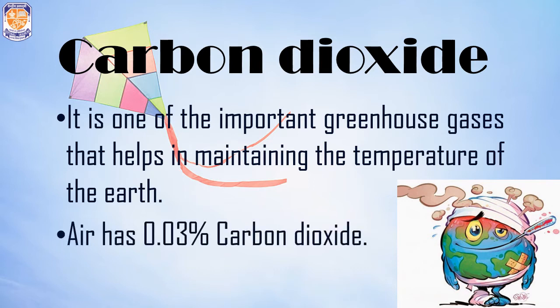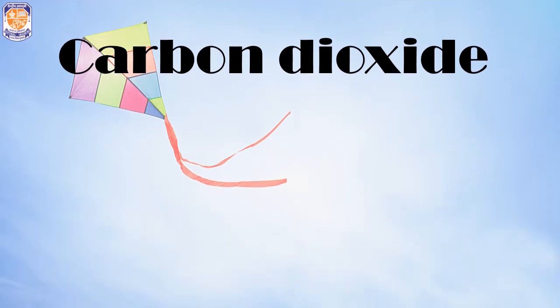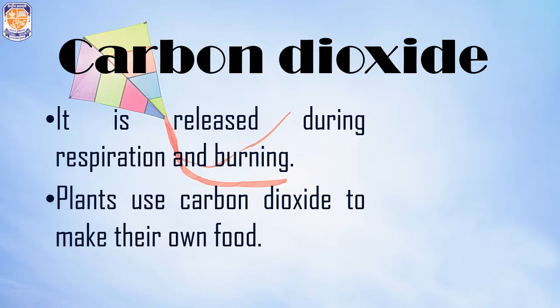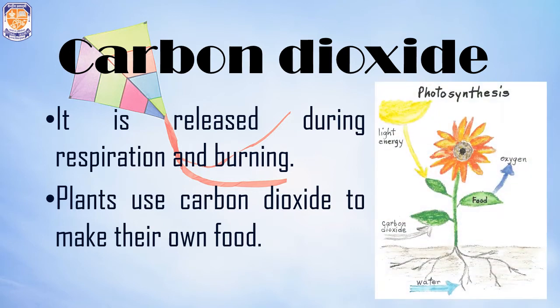Air has 0.03% carbon dioxide, but due to pollution, the amount is increasing in the atmosphere, which is harmful for our planet. Carbon dioxide enters the atmosphere through burning and respiration. Plants use carbon dioxide to prepare food through photosynthesis, and that food is consumed by animals for their energy and growth requirements.